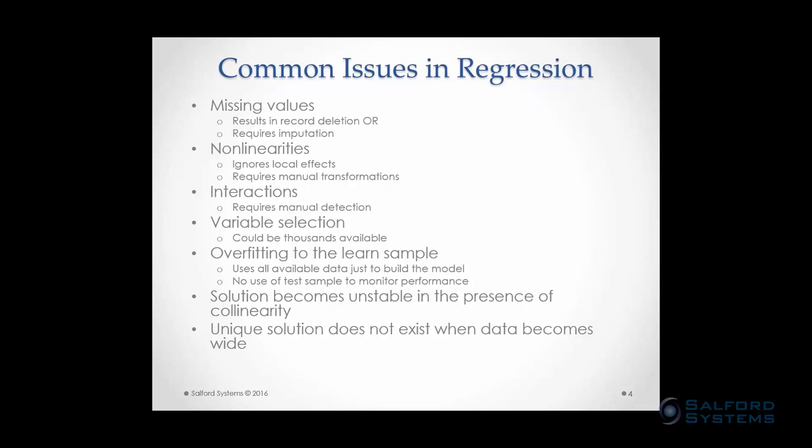Another problem is nonlinearities. Regression is a global hyperplane, so you're ignoring local effects happening in your data. You can try to add these in, but it requires manual transformations by the analyst, which can be time consuming to find. The same applies to interactions — manual detection is required. You have to figure out which variables are interacting and then put them in your model.